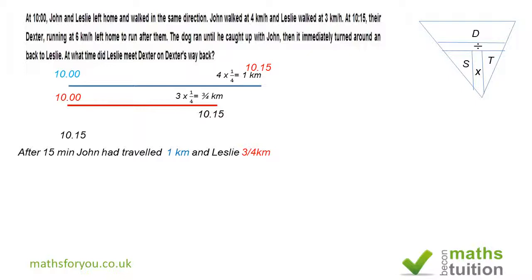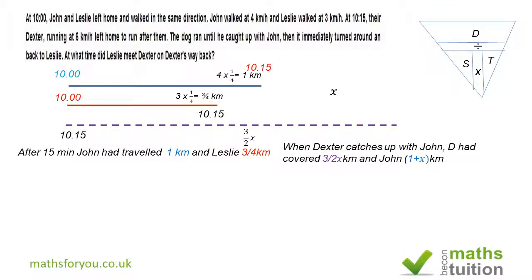At 10:15, Dexter the dog leaves home and runs after John. By the time they meet up, John will have covered another X kilometers. Because Dexter is running at a speed of one and a half times that of John, Dexter will have covered three over two X kilometers, or one and a half times X. By this time, John will have covered in total one plus X kilometers.